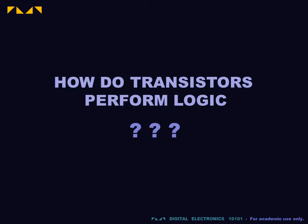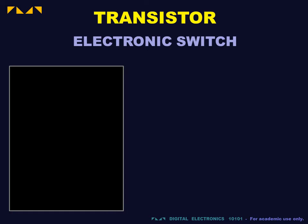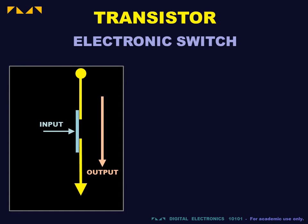We will now study how transistors perform logic operations. As we begin, we need to recall two things. First, transistors act as electronic switches. A current at the input results in a current at the output.